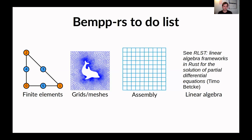Where this fits into BEMPP is we need four things to do a full boundary method solver. We need finite elements, which are essentially polynomial functions we can evaluate. We need grids and meshes for storing triangular or quadrilateral grids. We need something that assembles operators over these grids. And then we need linear algebra to solve the assembled systems. The linear algebra is covered by what Timo presented. The finite elements I've implemented but won't say too much about today. The assembly I'll probably talk about next year, but grids is where we'll focus today.